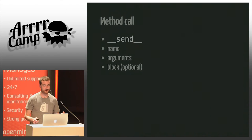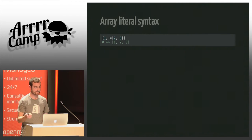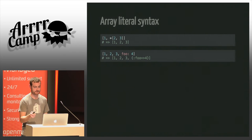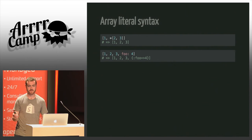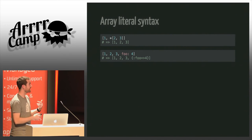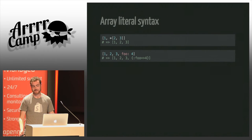It turns out that the arguments are so similar to an array that we can use the same syntax we use in a method call in the array literal syntax. The simplest example: with the splat we can use that in the array literal syntax. We can also use the hash-collecting double splat feature in an array literal. That's why I say that when we send a message we simply send an array of arguments — the method call syntax simply reuses the array literal syntax.